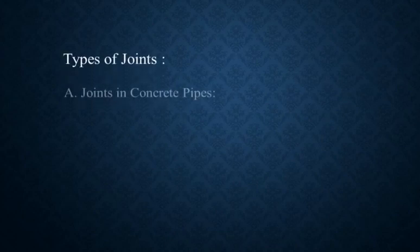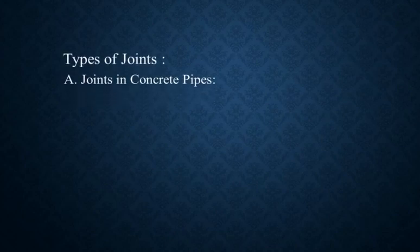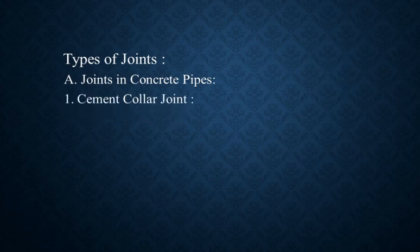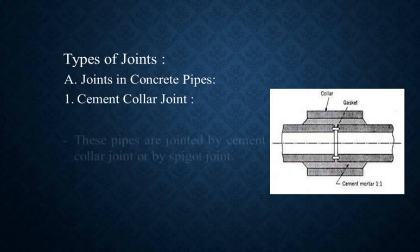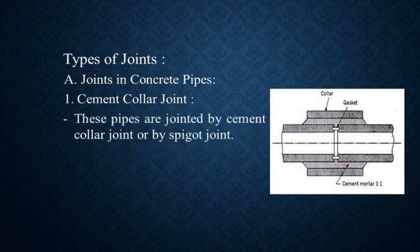Types of joints: A — joints in concrete pipes. First type is cement collar joint. This image is the cement collar joint. These pipes are jointed by cement collar joint or by spigot joint, which are used to connect concrete pipes.